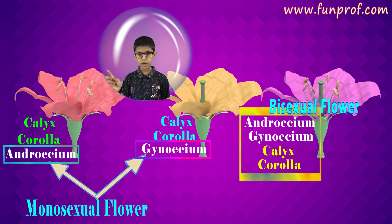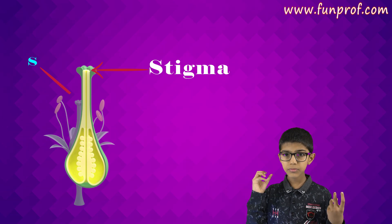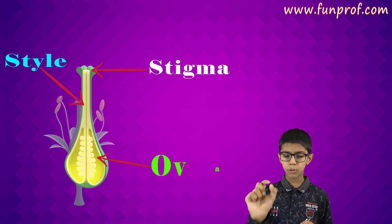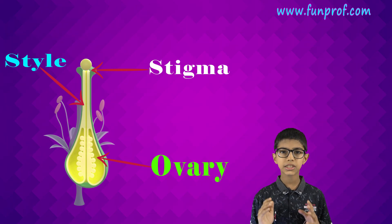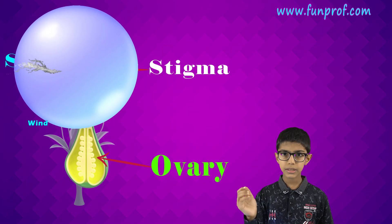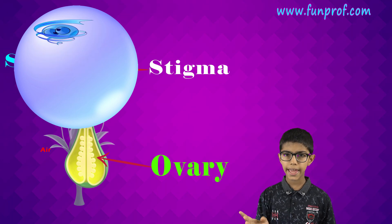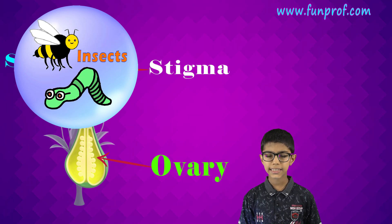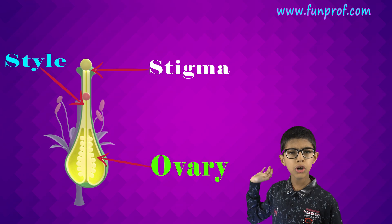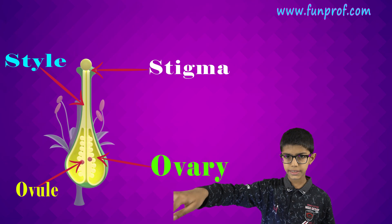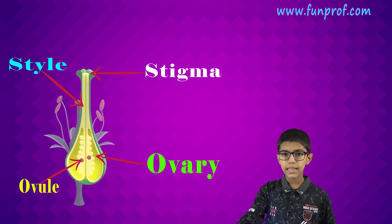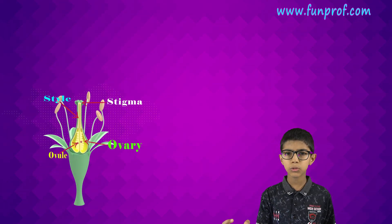Now we'll learn about pollination. Pollination is when the pollen grains are transferred to the stigma by various agents such as wind, water, air, insects, etc. The pollen grains then go through the style and into the ovary.